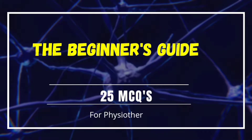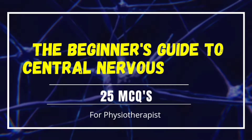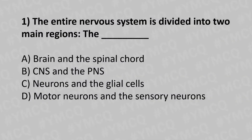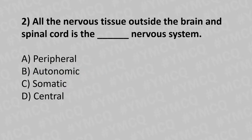Hello, welcome to today's topic: Central Nervous System MCQ Beginner's Guide. Let's move to our first question. The entire nervous system is divided into two main regions, the dash. Option A: brain and the spinal cord. Option B: CNS and the PNS. Options C: neurons and the glial cells. Option D: motor neurons and the sensory neurons. And the answer is option B: CNS and the PNS.